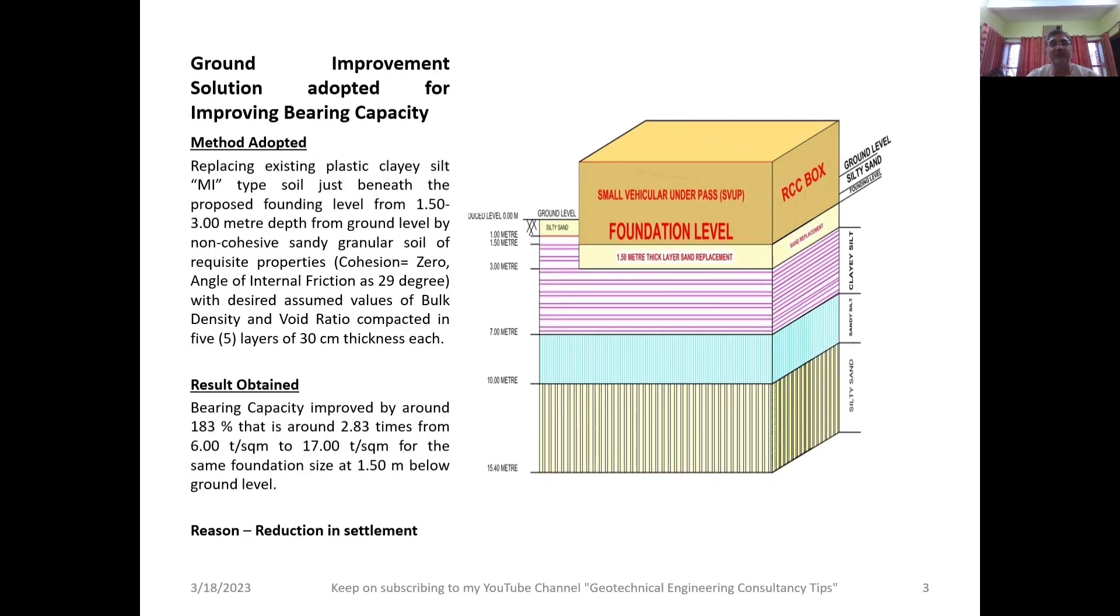As a ground improvement solution, we decided to replace a 1.50 meter thick soil layer from below the proposed founding level, from 1.50 to 3.00 meters depth from ground level, by a non-cohesive sandy granular soil of requisite properties. We excavated the clayey silt MI type soil and replaced it with non-cohesive sandy granular soil, assuming cohesion as zero, angle of internal friction as 29 degrees, with desired values of bulk density and void ratio.